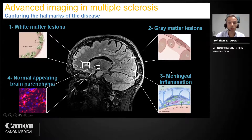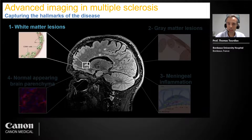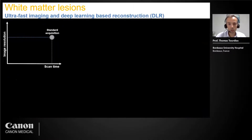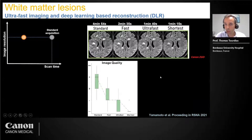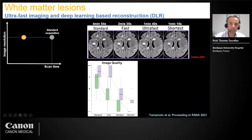Starting with white matter lesions, 3D FLAIR is the basic and recommended sequence. What is more advanced — already introduced by the first speaker — is now the capability to get very fast 3D FLAIR and then recover enough signal with denoising using deep learning based reconstruction. In a recent study we scanned MS patients with four different versions of FLAIR from standard to super fast. This obviously comes with noise and decreased image quality, but DLR helps to recover the quality. A two-minute scan plus DLR is even better than the standard FLAIR.